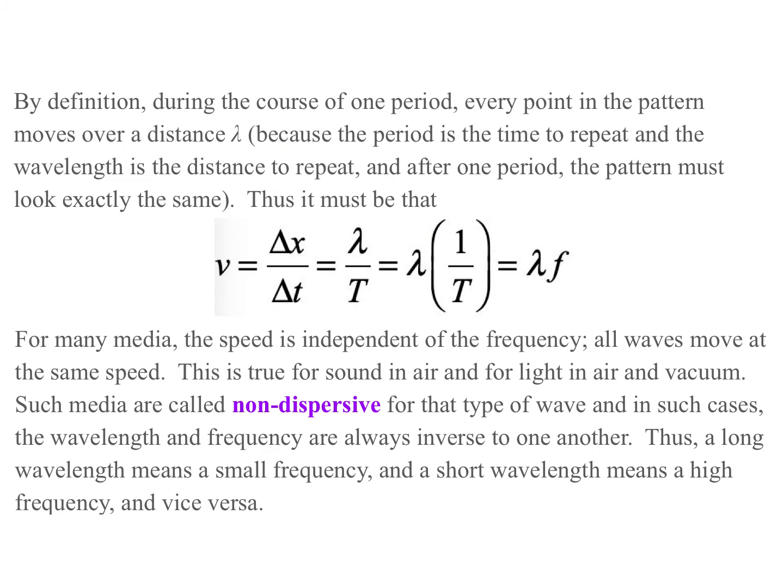By definition, during the course of one period, every point on the pattern moves over a distance lambda. Why? Because the period is the time to repeat, and the wavelength is the distance to repeat. So after one period, the pattern must look exactly the same. Everything must have moved exactly one lambda. And so we get, as indicated before, that v is lambda over T, or lambda times f.